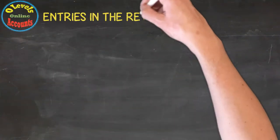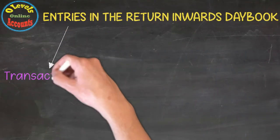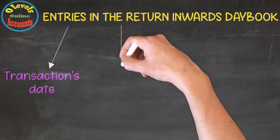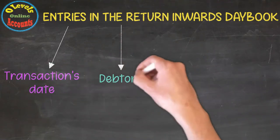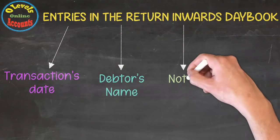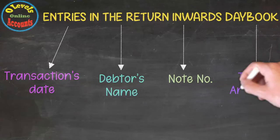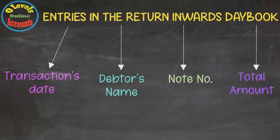There are four entries in the Return Inwards Daybook: firstly, the transaction date; secondly, the debtor's name; thirdly, the credit note number; and finally, the total amount against the goods returned by them.